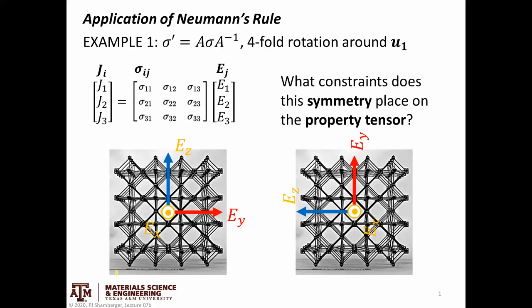The figure on the left-hand side is showing our lattice and an original coordinate system. On the right-hand side, we can see that we've applied that four-fold rotation, but because it's a symmetric structure looking down this axis, the structure has remained unchanged. So the question we're asking is: what constraints does this symmetry operation — a single four-fold rotation — place on the property tensor?